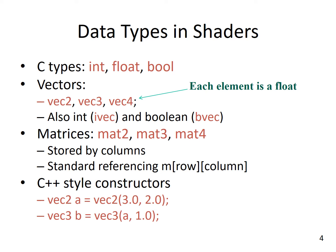We can have matrices with mat2, mat3, and mat4 — basically 2x2, 3x3, and 4x4 matrices, which are stored by columns. We can use standard referencing: if M is a matrix, we give in square brackets the row number and then the column number to reference a particular element. We have C++ style constructors, such as Vec2A = Vec2(3.0, 2.0), which puts these two elements into a 2D vector, and we can reuse Vec2 to define Vec3 and store it in another variable.